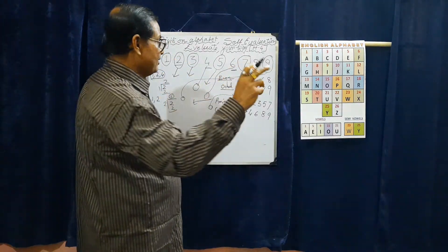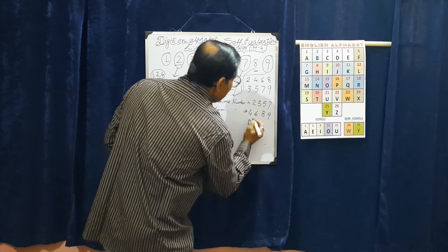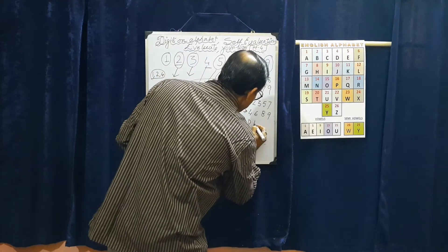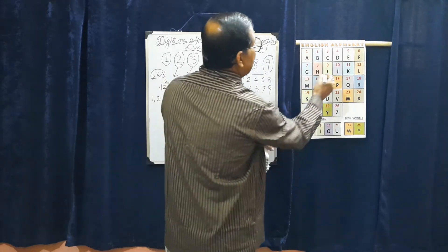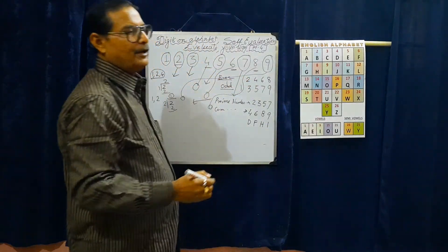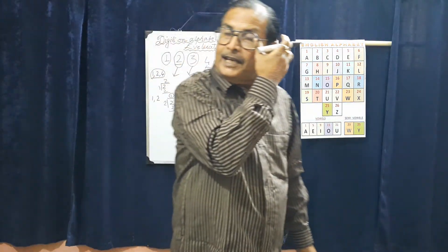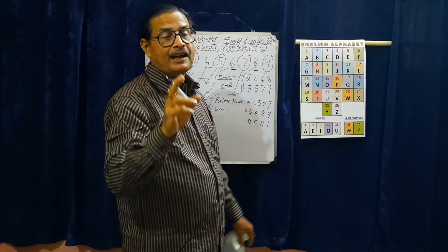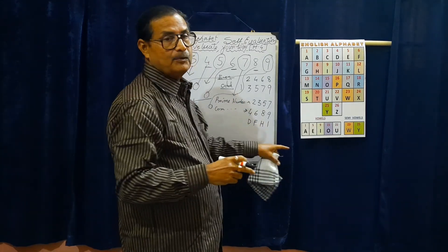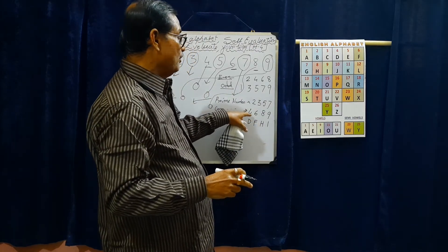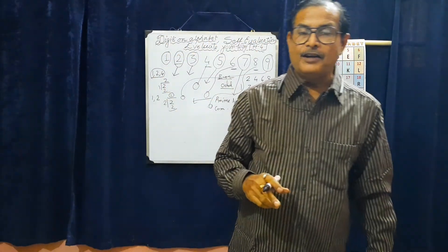Now relating back to our letter system: the compound numbers 4, 6, 8, 9 correspond to letters D, F, H, I by numerical position. So in other words, D, F, H, I are the compound letters — 4 is D, 6 is F, 8 is H, and 9 is I. These are the compound numbers.